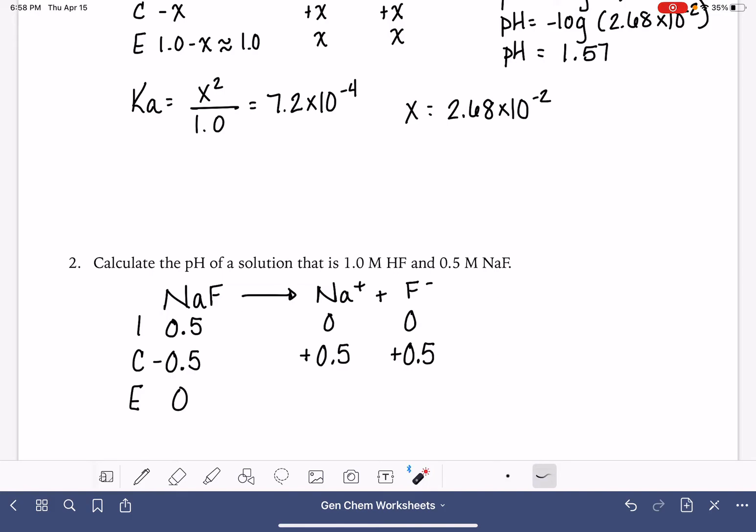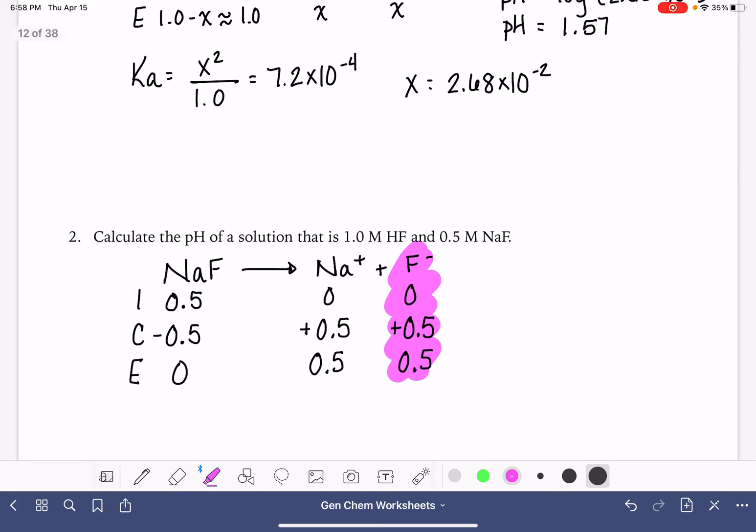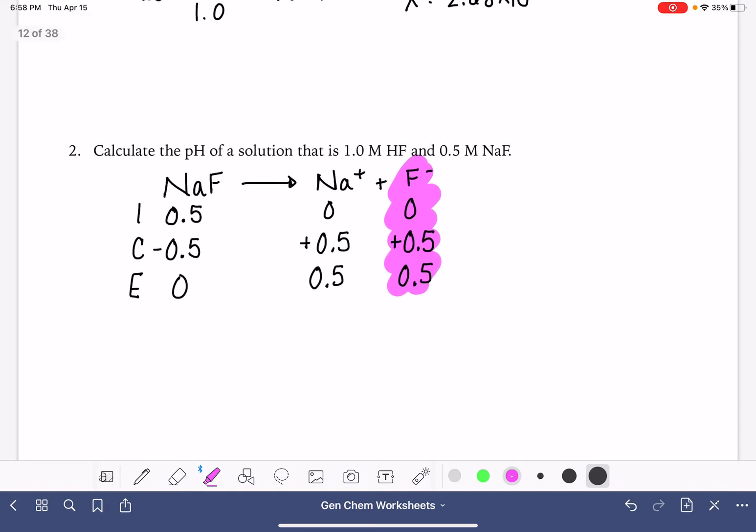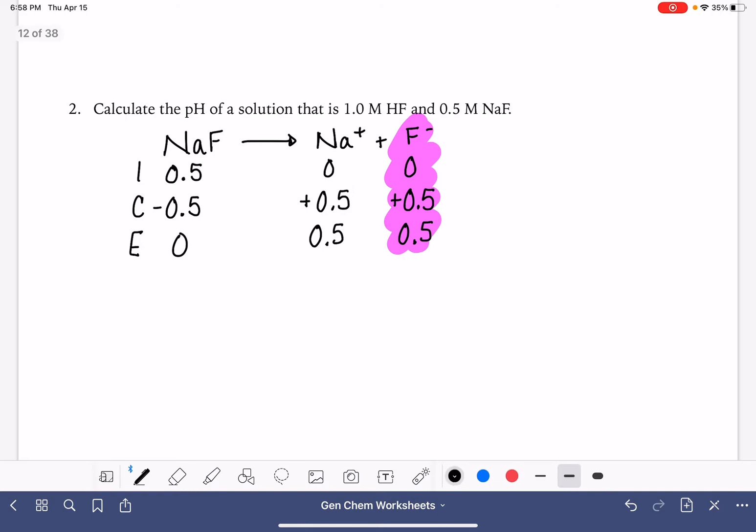And when this is all done, we're going to do the math here. We're going to have no NaF. We're going to have 0.5 molar Na plus and 0.5 molar F minus. And the F minus, this is our common ion. So the F minus is going to have an effect on the pH of the solution.